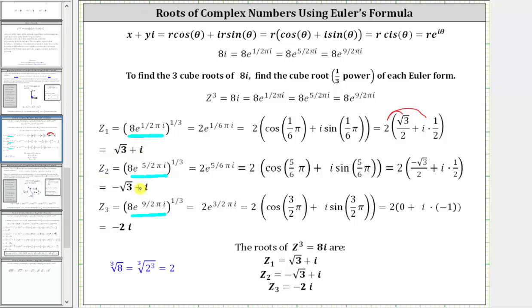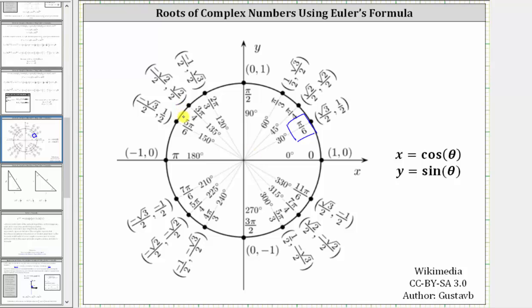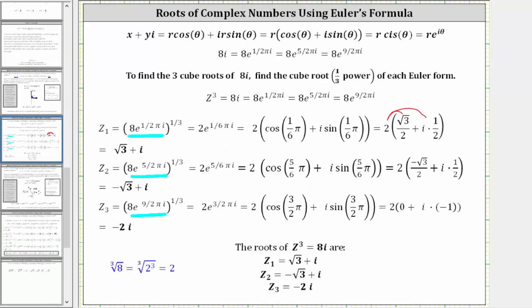For z₂, the only difference is the exponent on e. Multiplying the exponent by 1/3 gives e raised to the power of i·(5π/6). Converting to polar form, we find cosine(5π/6) = −√3/2 and sine(5π/6) = 1/2, using the unit circle. Distributing the 2 gives us our second complex solution: −√3 + i.